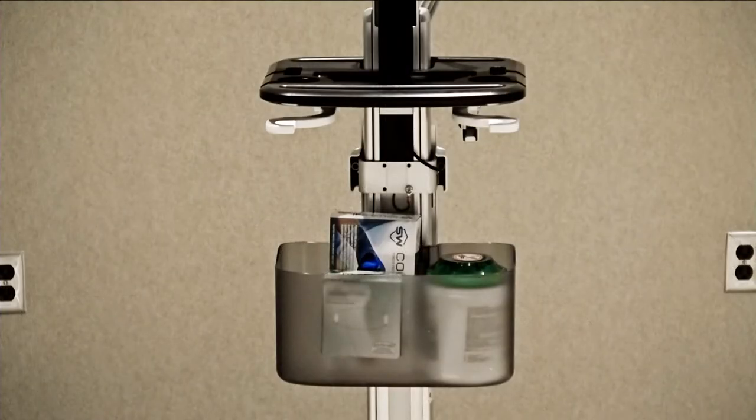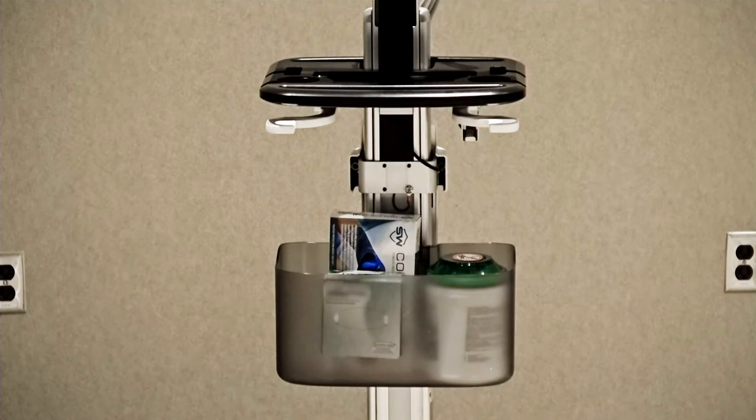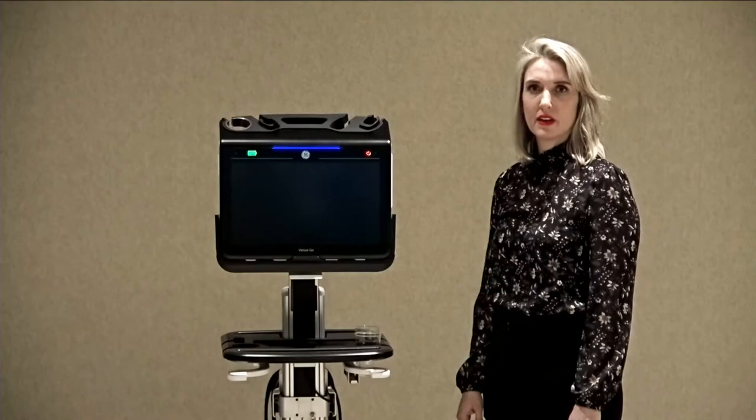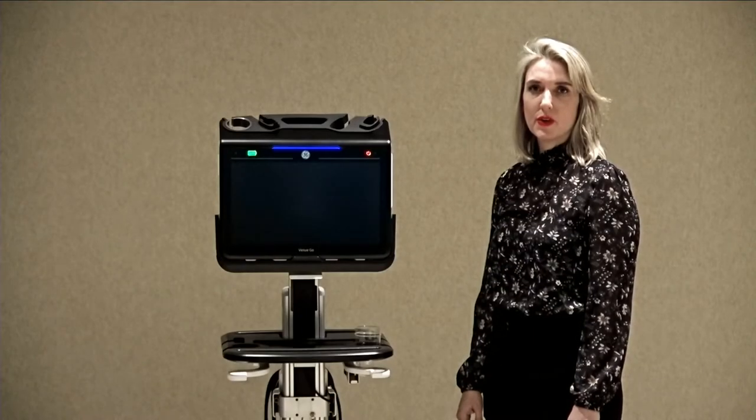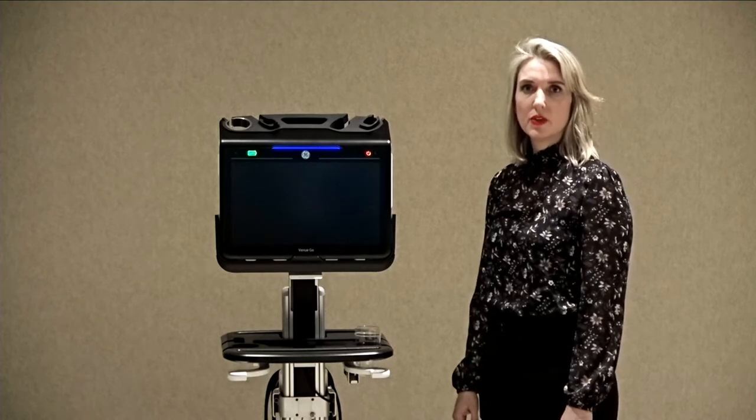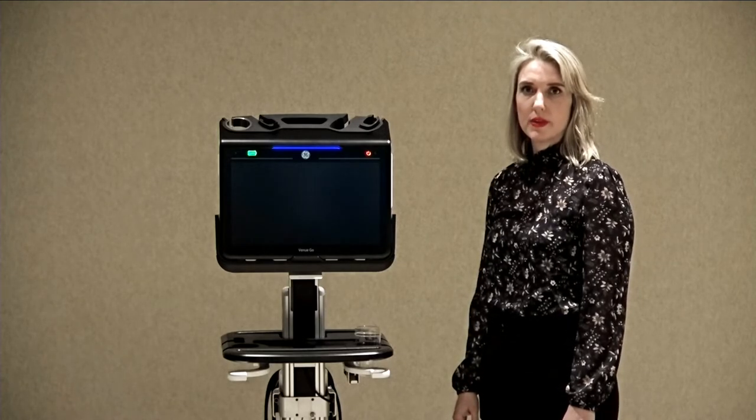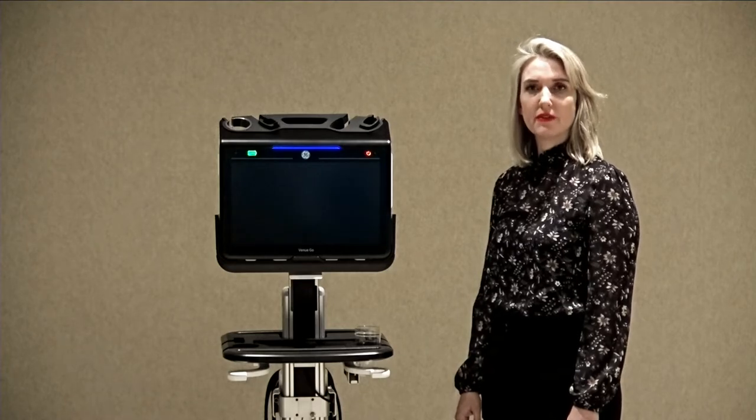The Venue Go comes with a storage bin for your supplies. Additional optional accessories include an ECG module, a black and white printer, and a barcode reader. Both the Venue Go and the Venue Go cart are customizable. You can place the gel cups on the cart and the probe inserts on the system where it's convenient for you.